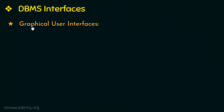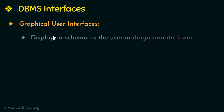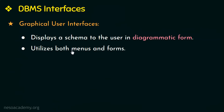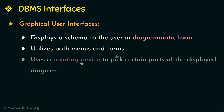The next kind of interface is the Graphical User Interface or GUI. A GUI displays a schema to the user in a diagrammatic form and the user manipulates this diagram to specify a query. A GUI utilizes both menus and forms, and uses a pointing device like a mouse to pick certain parts of the displayed schema diagram.